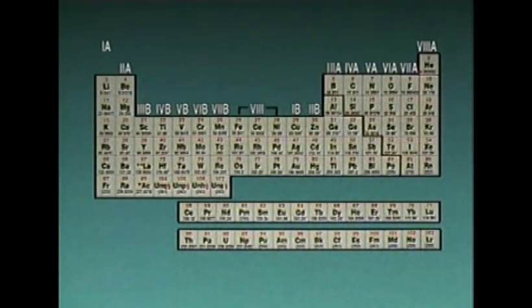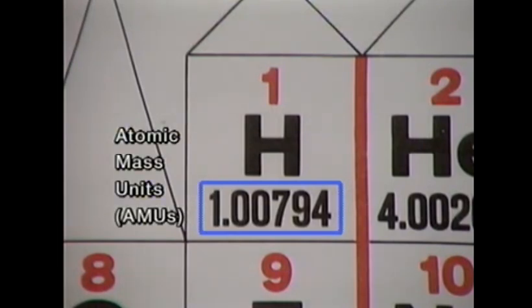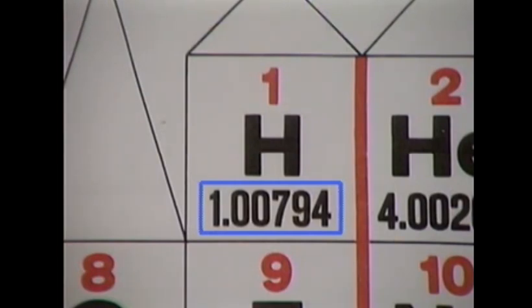If you know how many atoms, ions, and molecules there are in a reaction, you can figure out how much of each reactant you'll need and how much product will be produced. To do this, you have to know the atomic weights of all the atoms involved. That information can be found in a periodic chart of the elements. The atomic weight is shown just below the element's symbol and is expressed in atomic mass units, or AMUs. According to this chart, an atom of hydrogen has an atomic weight of approximately one AMU. One AMU is approximately the weight of a single proton or a single neutron.